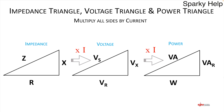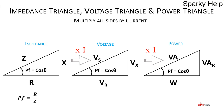Hopefully you can see the relationship between the three triangles. You can't intermix them — they have to be independent of each other — but they are all related. The angle in each relates to the power factor, and power factor is the cosine of that angle. All three triangles share the same angle and therefore the same power factor.